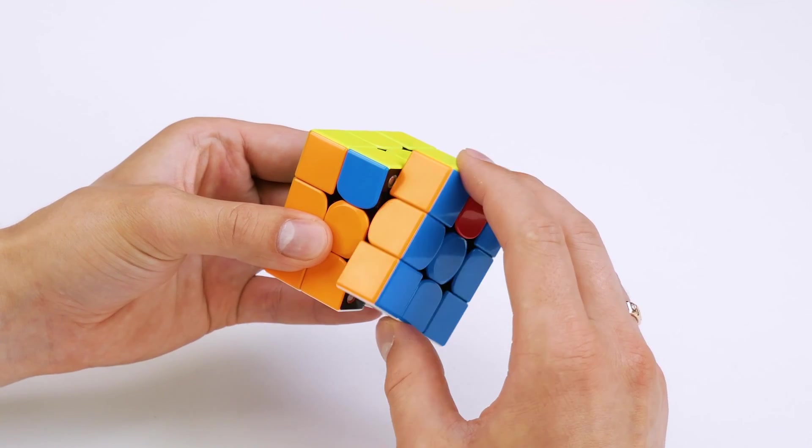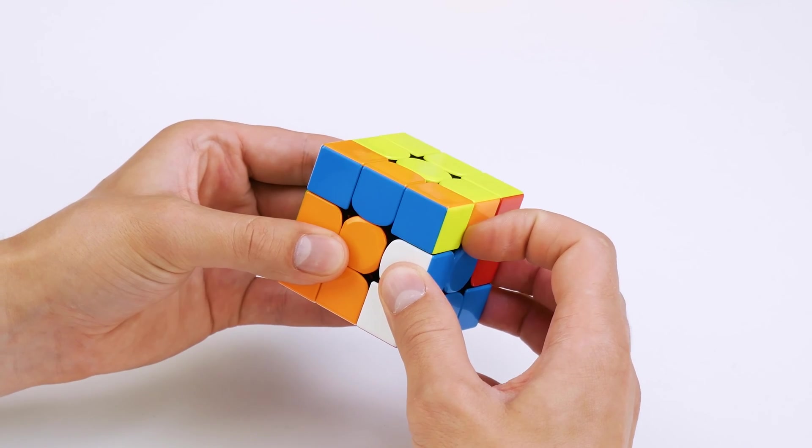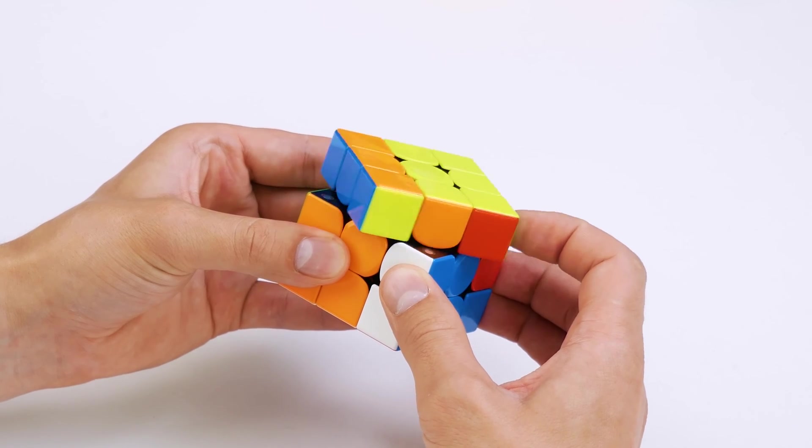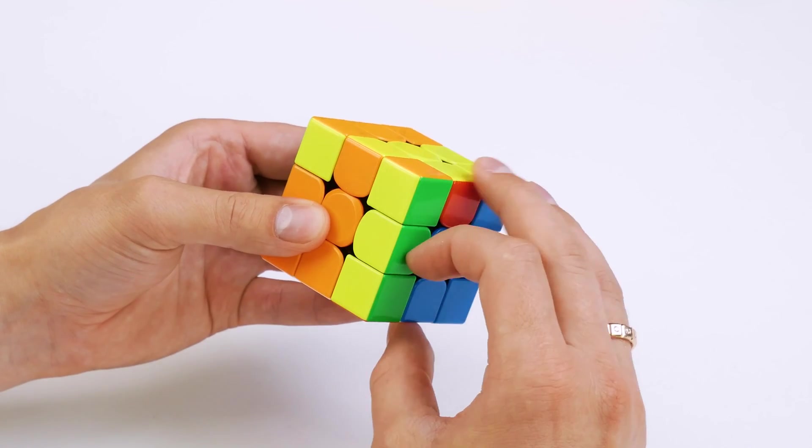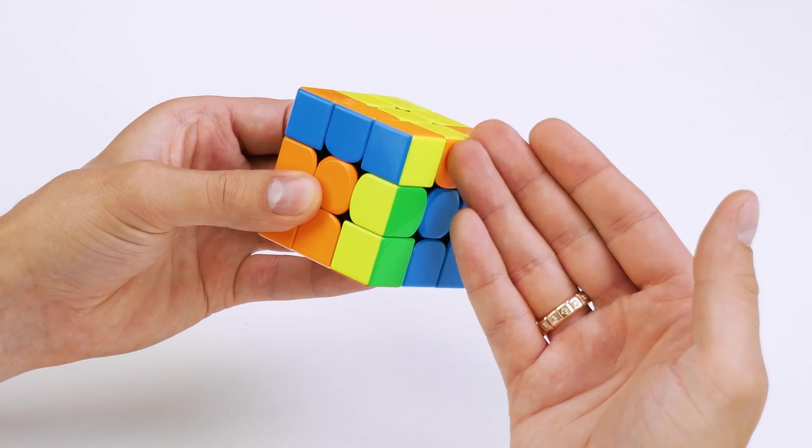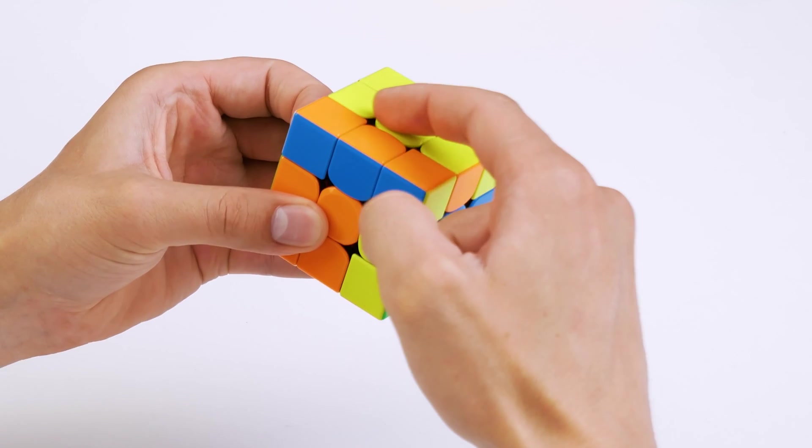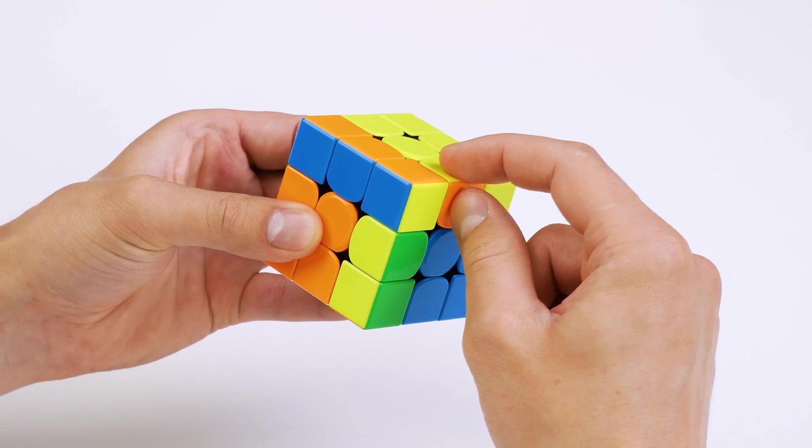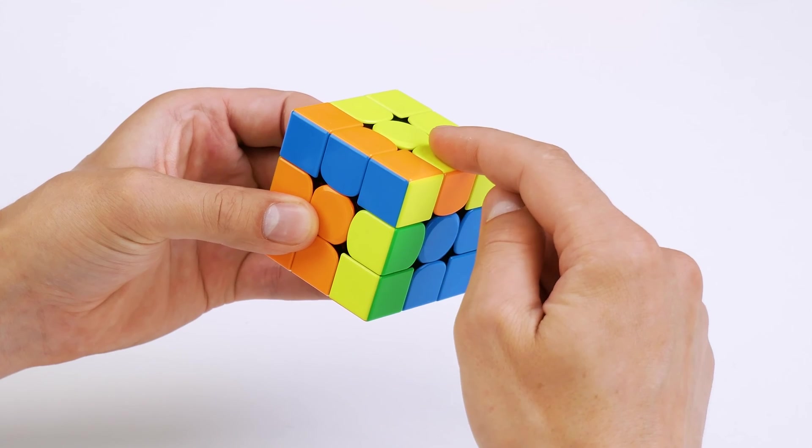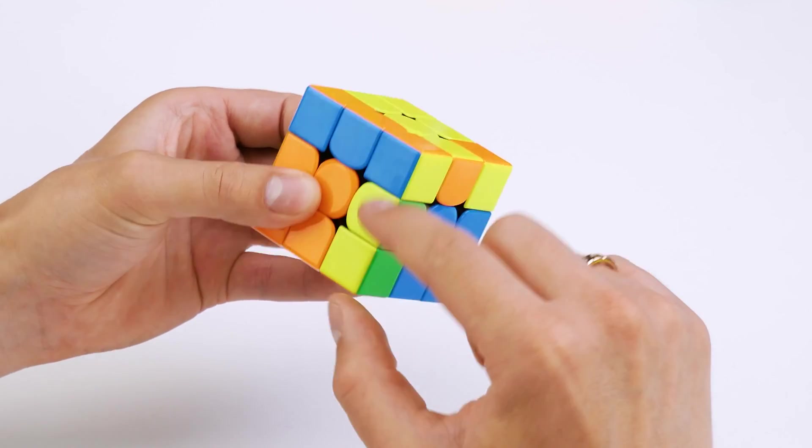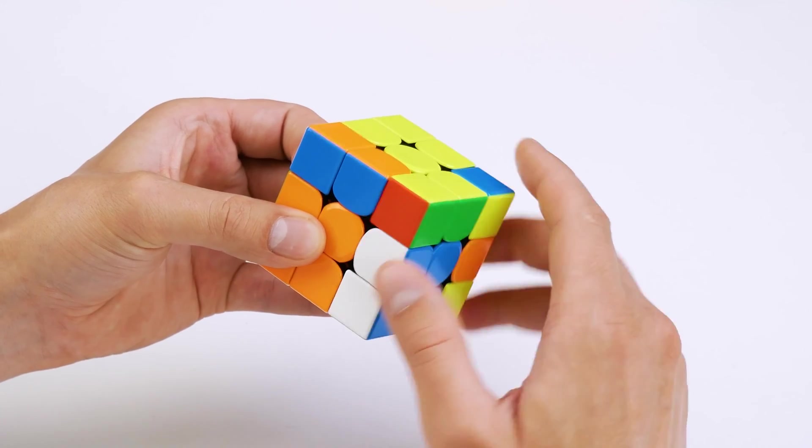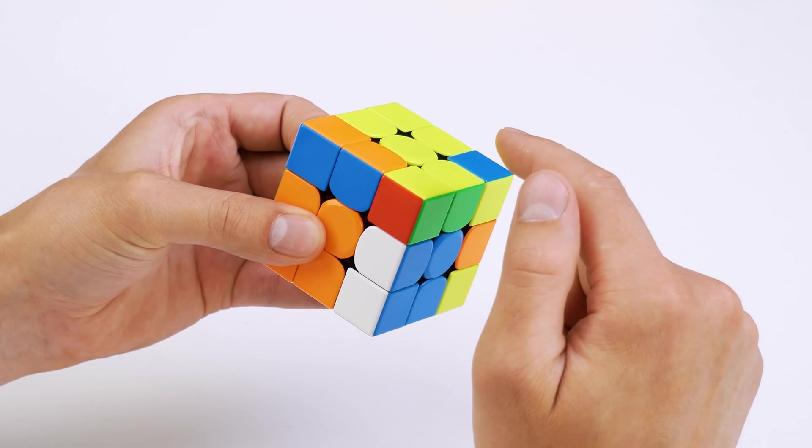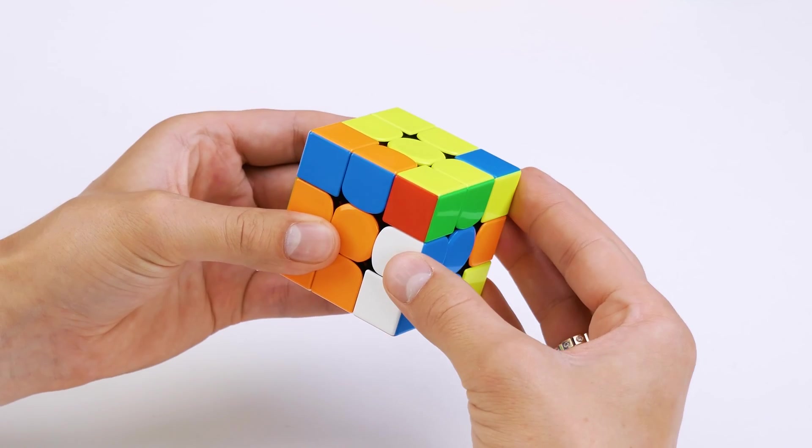At first, it's like I'm doing a regular sexy move, but not with one turn of the top side, but with two. Then we come to this case. Now I see such a square of yellow and an extra detail in it. And it just needs to be cut off with this block. As if I cut it off, put it there. Now we make a double turn.